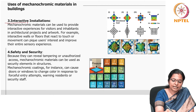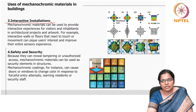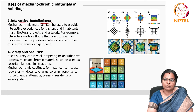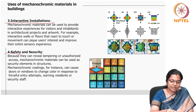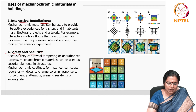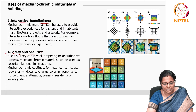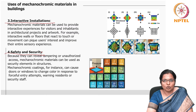The third use is interactive installations. Mechanochromic materials can be used to provide interactive experiences for visitors and inhabitants in architectural projects and artwork — for example, interactive walls or floors that react to touch or movement, peaking users' interest and improving their sensory experience. The fourth use is safety and security: because they can reveal tampering or unauthorized access, mechanochromic materials can serve as security elements — coatings can cause doors or windows to change color in response to forceful entry attempts, warning residents or security staff.